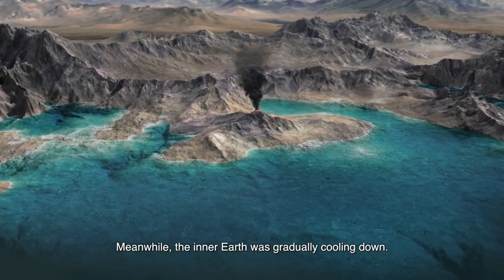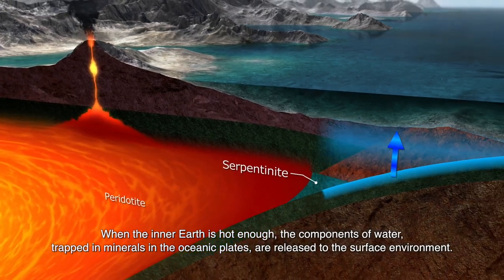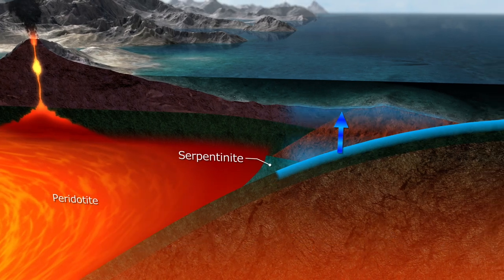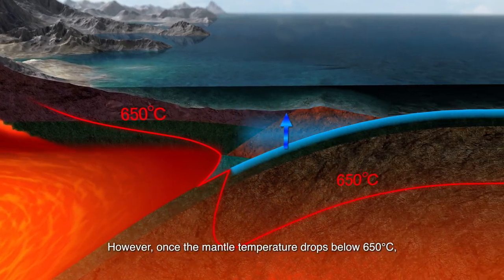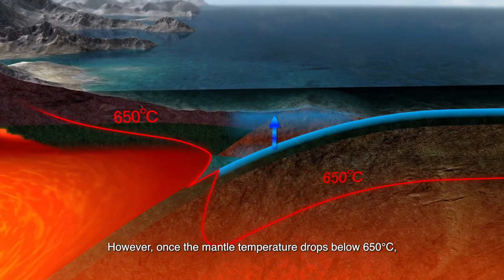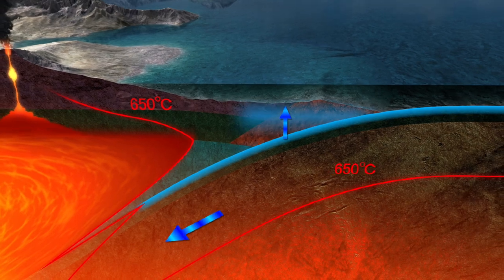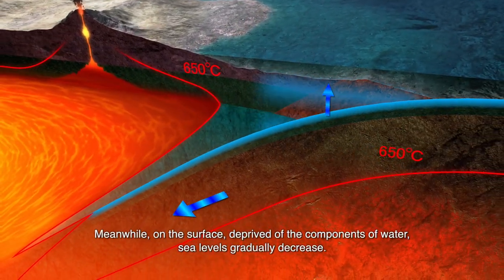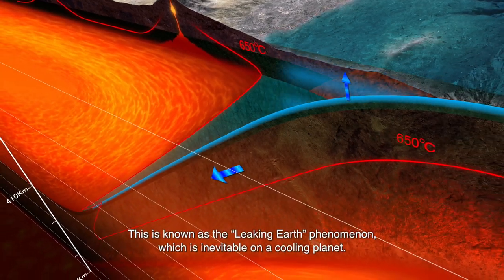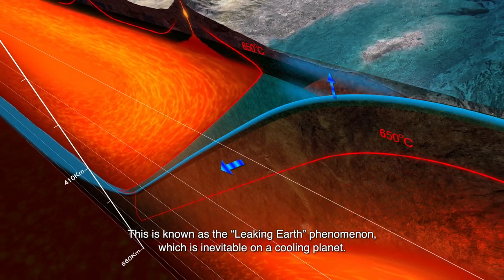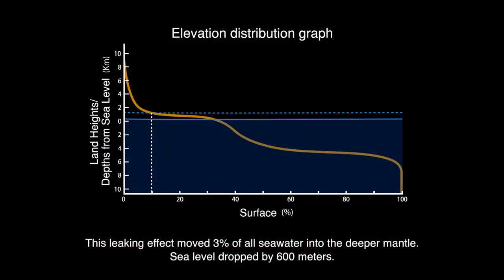Meanwhile, the inner Earth was gradually cooling down. When the inner Earth is hot enough, the components of water trapped in minerals in the oceanic plates are released to the surface environment, and seawater level is unaffected. However, once the mantle temperature drops below 650 degrees Celsius, minerals carry these water components down into the upper mantle. Deprived of the components of water on the surface, sea levels gradually decrease. This is known as the leaking Earth phenomenon, which is inevitable on a cooling planet, and moved 3% of all seawater into the deeper mantle.